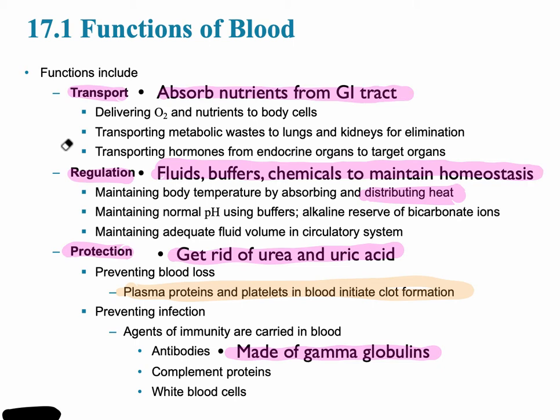The next function is regulation, which is all about keeping our body in homeostasis within a very specific range. One example of this is maintaining a pH between 7.35 and 7.45. Whenever that pH goes out of balance, there are chemicals that act as buffers to help prevent any drastic changes.